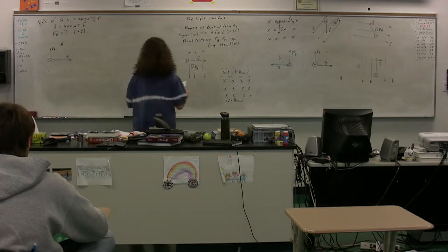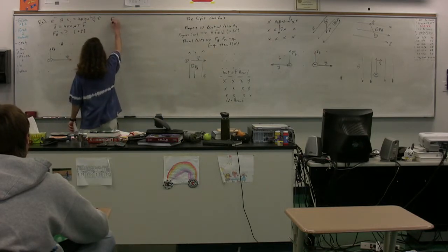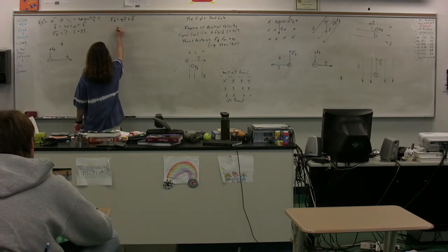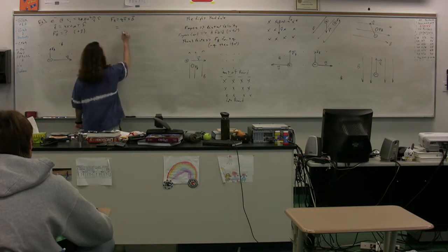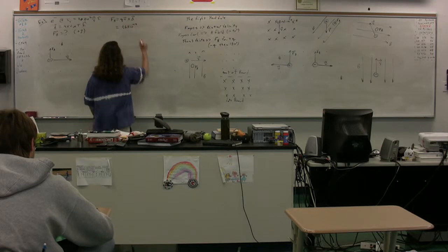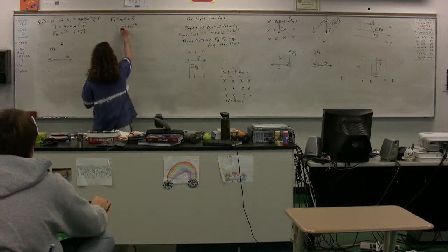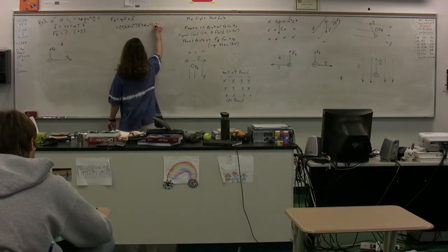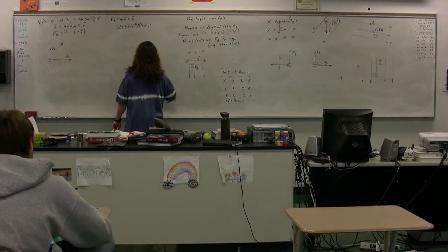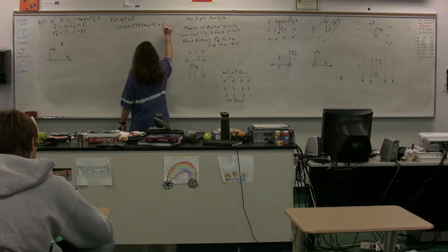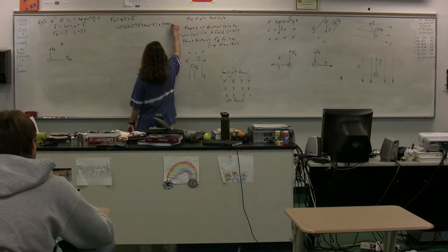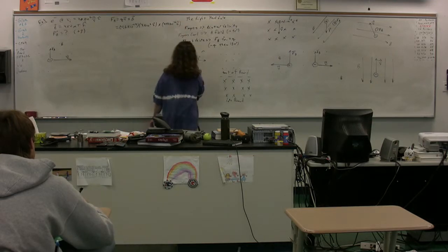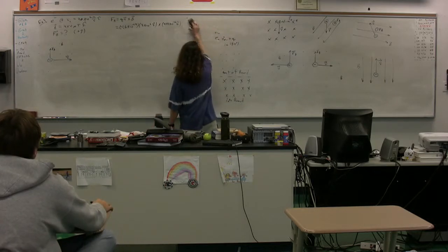We should get that as an answer. So using our cross product, the magnetic force is equal to q v cross B, the charge times the velocity cross product with the magnetic field. So we have the charge of the electron, 1.6 times 10 to the negative 19. Now, that charge is negative, so we have negative 1.6 times 10 to the negative 19, times the velocity 3 times 10 to the 6th i cross product with B, the 450 times 10 to the negative 6th in the positive k direction. So now we have to be able to do the cross product.